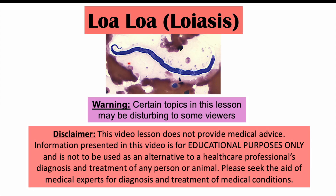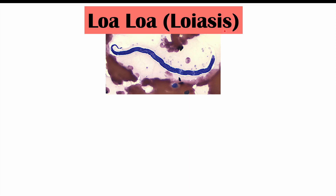Hi everyone, this lesson is on a parasitic worm infection known as loa loa or loasis, which is also known as African eye worm. We're going to talk about how individuals become infected with this particular parasitic worm, what are some of the signs and symptoms, how it's diagnosed, and how it's treated.